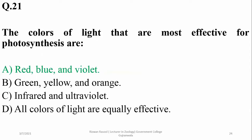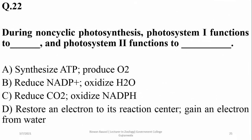The colors of light that are most effective for photosynthesis are red, blue, and violet compared to other wavelengths. During the Z scheme, photosystem 1 functions to restore an electron to its reaction center, and photosystem 2 functions to gain that electron from water, because photosystem 2 involves photolysis as well.